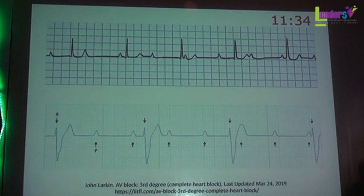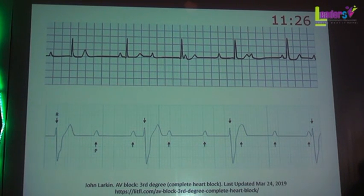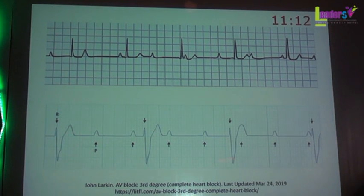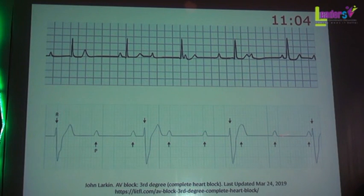On ECG, there are effectively two pacemakers because there is a block — the sinoatrial node cannot send impulses to the ventricle. An accessory pacemaker in the ventricle beats at a different rate. The PP waves are regularly spaced at 100 beats per minute, while the RR rate is only 40 per minute. There is no relation between the P wave and the QRS — the atrium and ventricle are working independently.